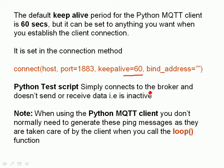I've created a simple Python test script. All it does is connect to the broker and hold the connection open without doing anything — it stays inactive. The actual client code doesn't generate the ping requests itself; that's done in the background by the client class. But you do need to make sure you're running a loop, otherwise it won't work.